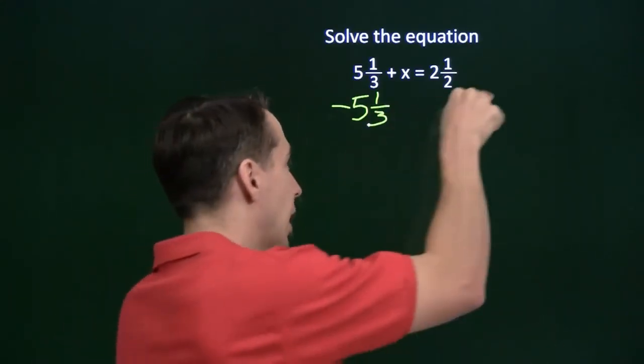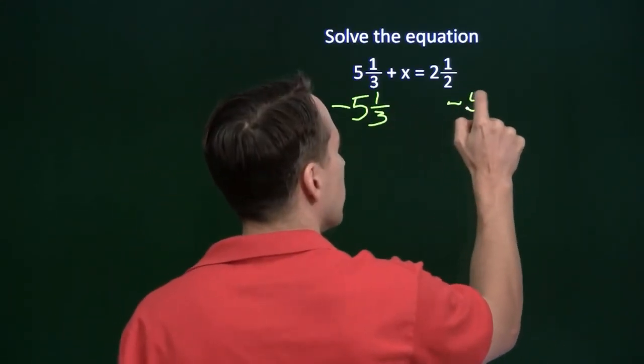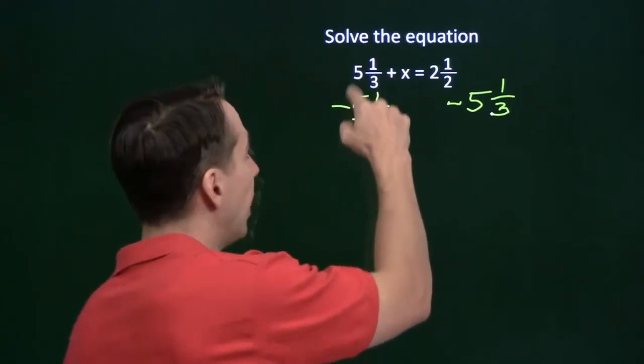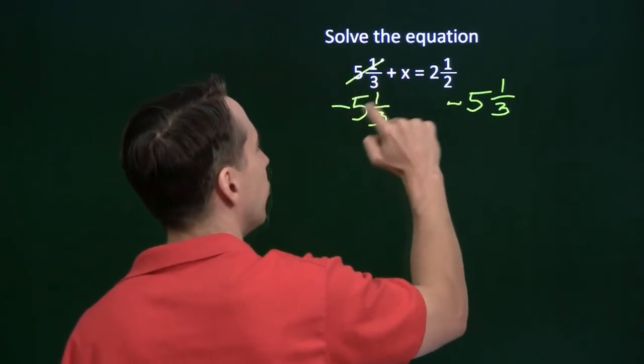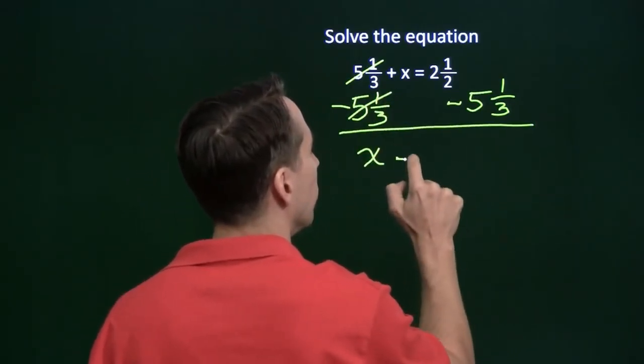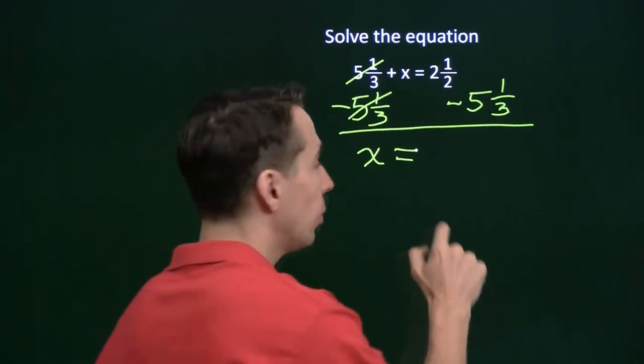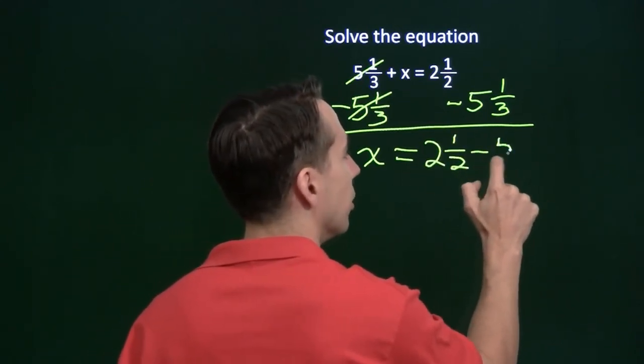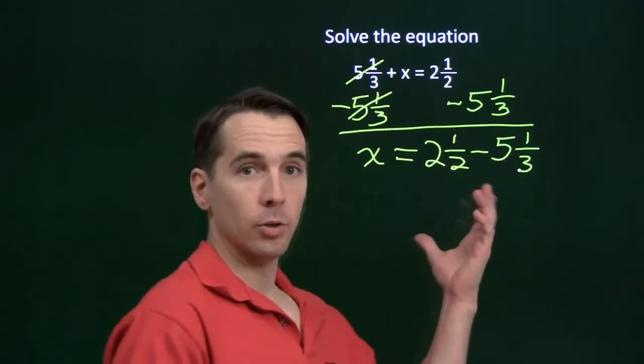We can get rid of it from this side of the equation by subtracting it. Now, of course, can't play favorites. Have to do that on the other side too. So we're going to subtract 5 and a third over there as well. And we subtract 5 and a third from 5 and a third. Well, those just cancel out and we're left with x all alone. And then over here, we have the 2 and a half minus the 5 and a third.